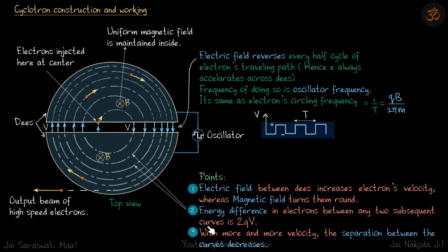The energy difference between two curves is 2qV, which is a constant. Energy is proportional to v², so energy is increasing in constant jumps and it's proportional to v², which means v² is increasing linearly, which means v is increasing as a root function. The radius is proportional to v, and v is increasing as a function of a root.